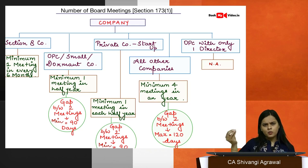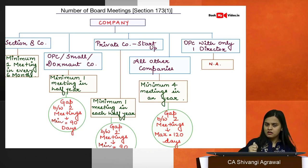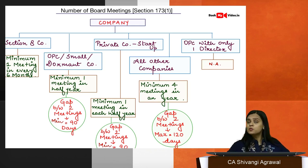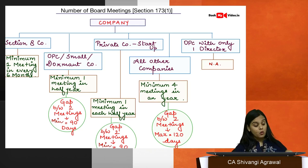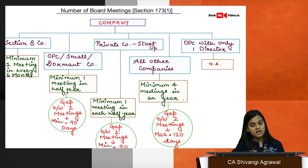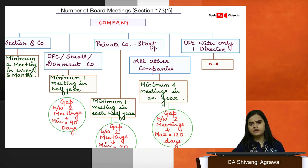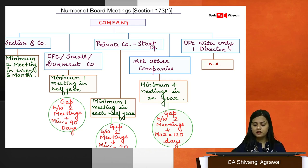Sometimes — for example under sections 186 and 203 — you also have a Unanimous Board Resolution, or UBR. The difference between a board resolution and a UBR is that all directors present must vote; they cannot abstain. They must vote and vote in favor. When all directors present vote in favor, a UBR is passed. UBR is required in only two sections of the Companies Act, plus one rule.